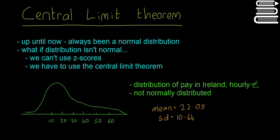If data isn't distributed normally, if there isn't a normal distribution, we can't use z-scores, which are what we've been using so far to do most of our calculations. So we're going to have to use the central limit theorem instead.